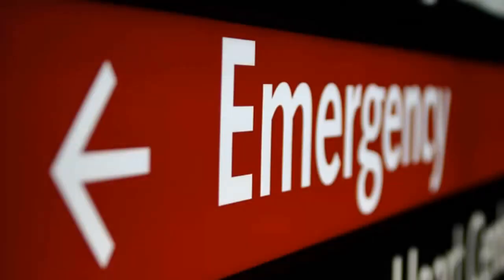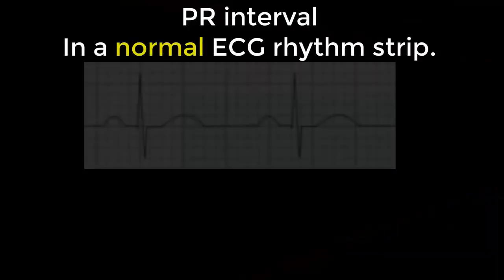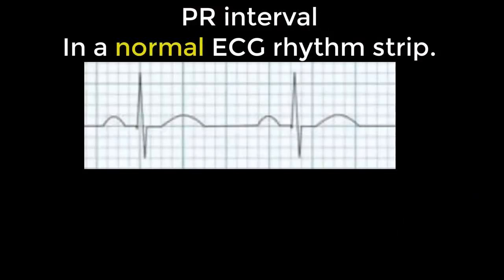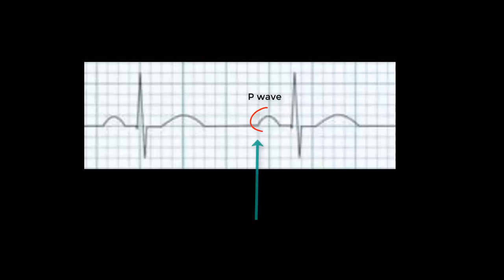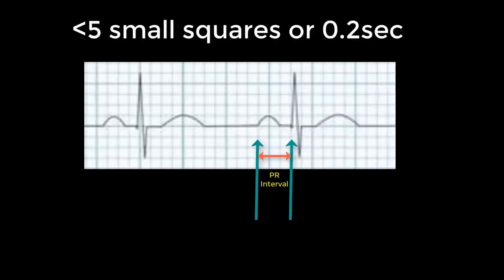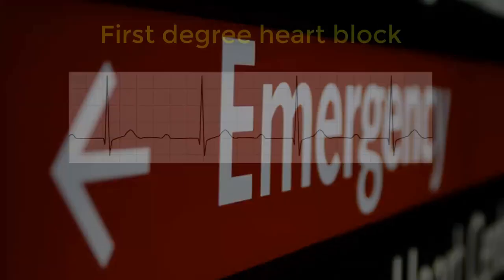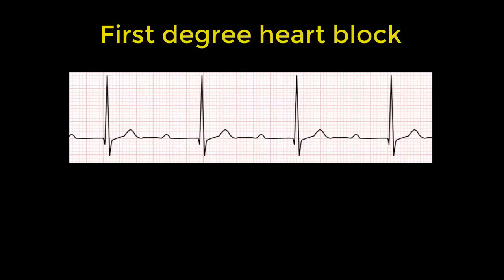Let's get into it. First degree heart block. Remember the PR interval — that's the distance between the beginning of the P wave and the beginning of the QRS complex. Normally, as in this example, it's less than five small squares, or 0.2 of a second.